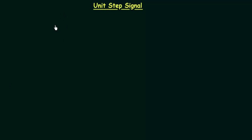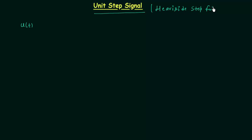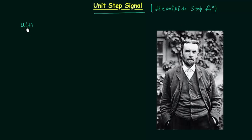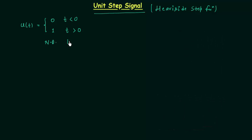We have completed the unit impulse signal. The next type of signal is the unit step signal. Unit step signal is represented by u(t) and it is also known as the Heaviside step function, named after Oliver Heaviside. u(t) is equal to 0 when time t is less than 0, and it is equal to 1 when time t is greater than 0. u(t) is not defined at time t equal to 0. Using this definition, we can easily plot the waveform of the unit step signal.